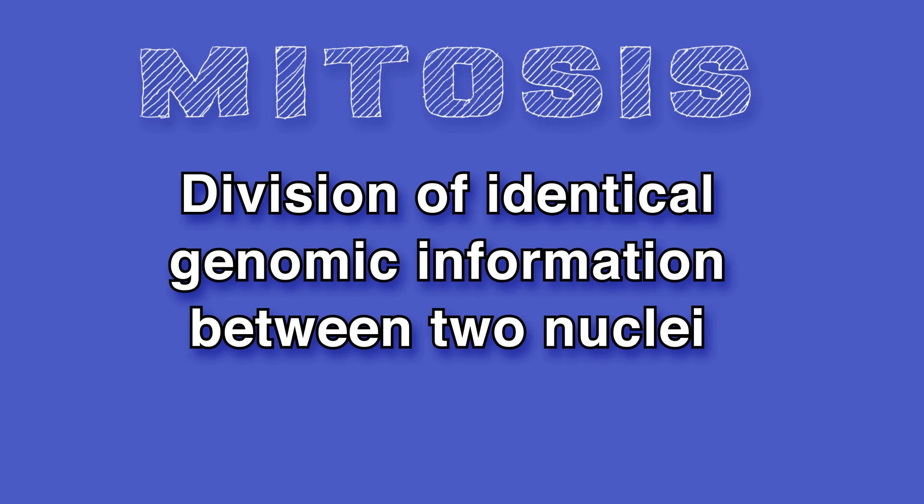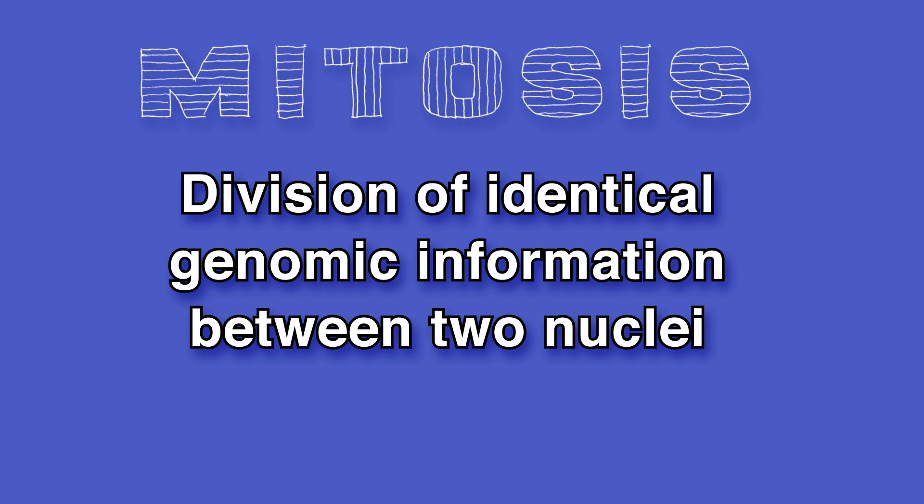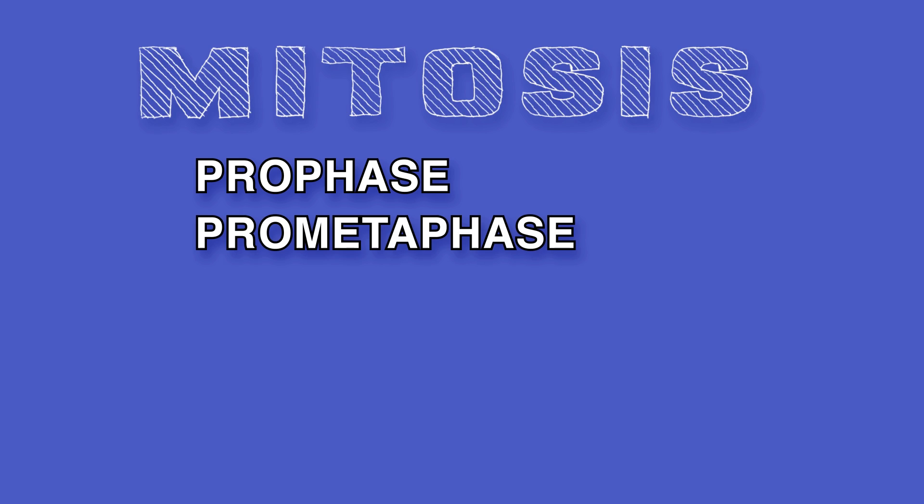Mitosis is nuclear division which occurs during cell division. Mitosis has five stages that happen with great precision. The stages are prophase, prometaphase, metaphase, followed by anaphase, and then finally telophase.